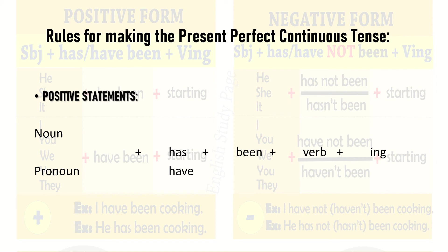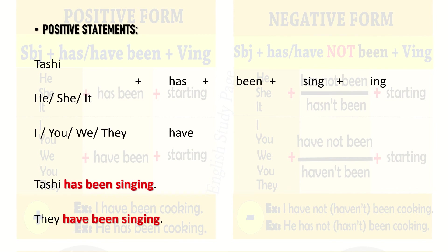We have the noun — like the name of a person — or a pronoun: he, she, it, they, we, you, I. To that, we add 'has' or 'have' as the case may be, then 'been', plus the verb, plus '-ing'. For example: 'he/she/it has been singing', but 'I/you/we/they have been singing'.